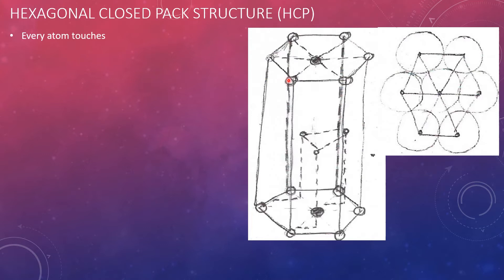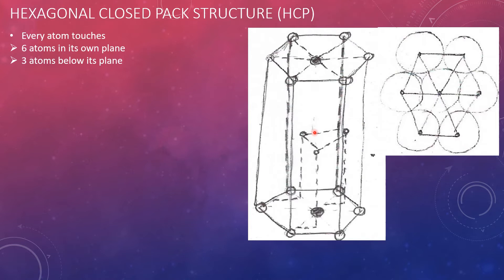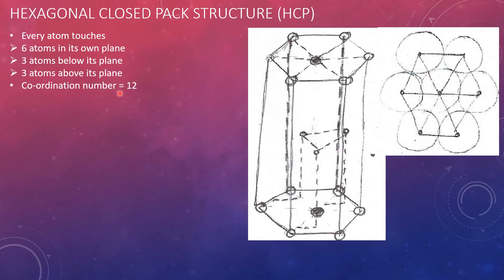In the HCP structure, every atom touches six atoms in its own plane, which can be seen from the diagram — one atom is touching six atoms in its own plane. Then three atoms below its plane, these atoms are located inside the body of the structure. Similarly, if you consider a hexagonal unit cell above this unit cell, it will also have three atoms inside its body, so this atom will be touching those three body atoms. Therefore, the coordination number is equal to 12.